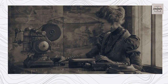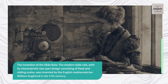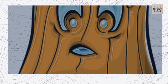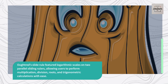The Invention of the Slide Rule: The modern slide rule, with its characteristic two-part design consisting of fixed and sliding scales, was invented by the English mathematician William Oughtred in the 17th century. Oughtred's slide rule featured logarithmic scales on two parallel sliding rulers, allowing users to perform multiplication, division, roots, and trigonometric calculations with ease.